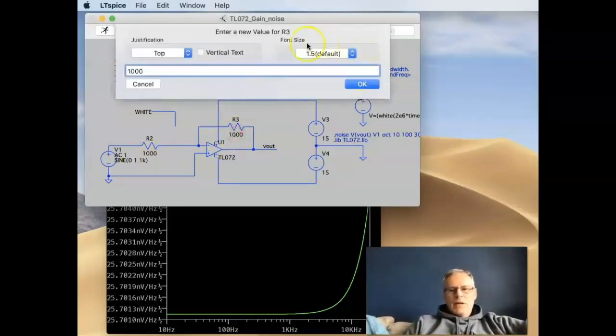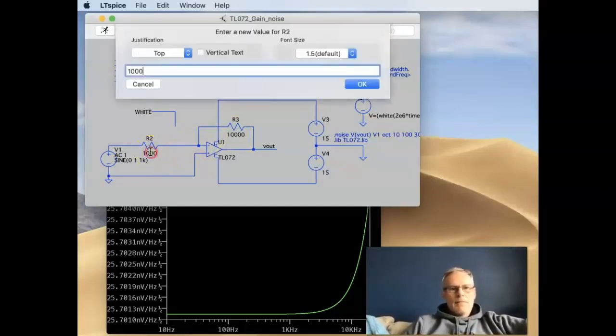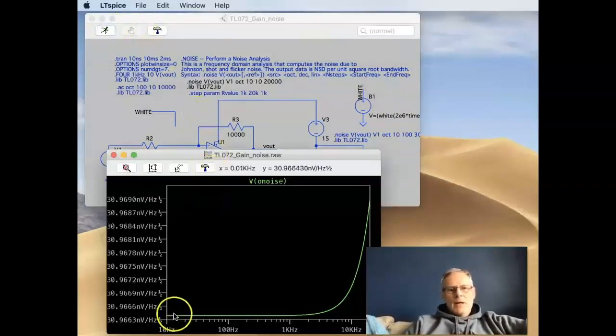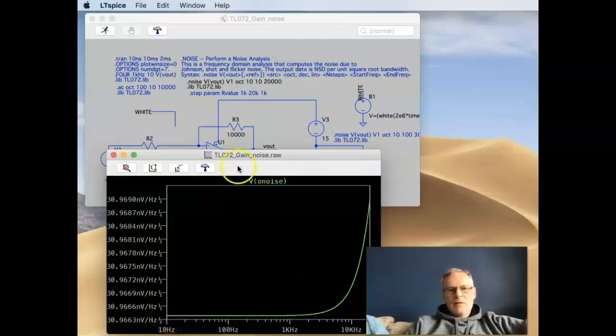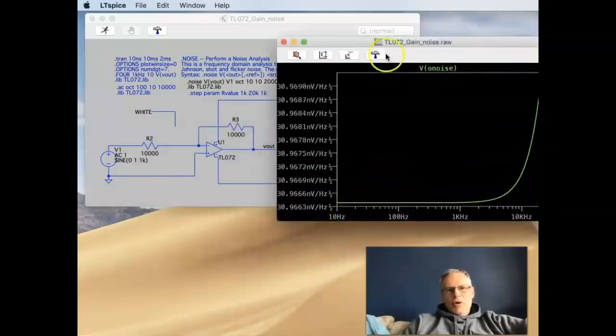So we can go here, let's say 5, let's go for 10K. But let's keep this one at 10K as well. So we've still got unity gain. Rerun the analysis. And you can see we've got a slight increase. We've gone from 25 to 30 nanovolts now. So it's clearly the thing that's changed are these resistor values. So it's giving us a little bit more noise.